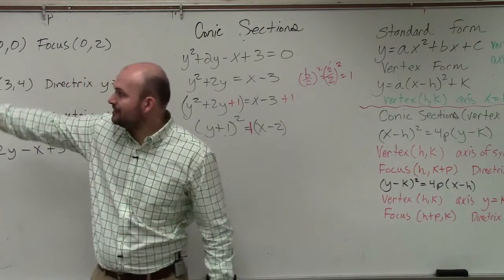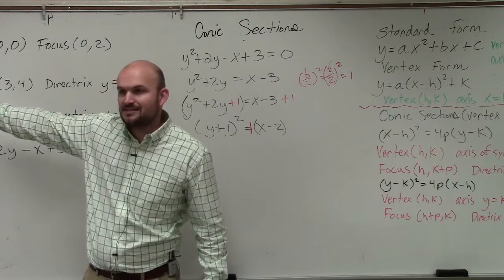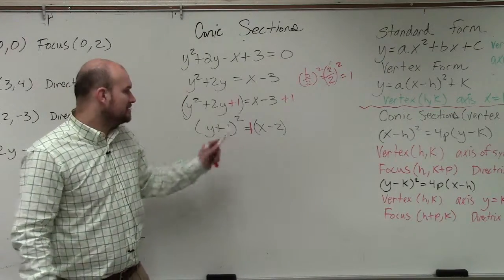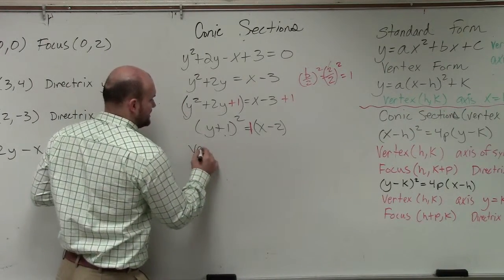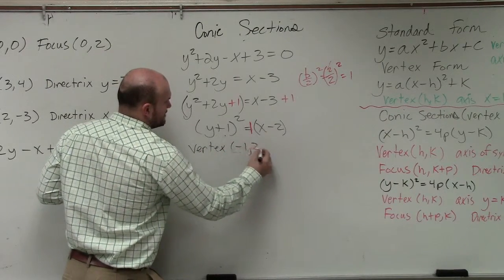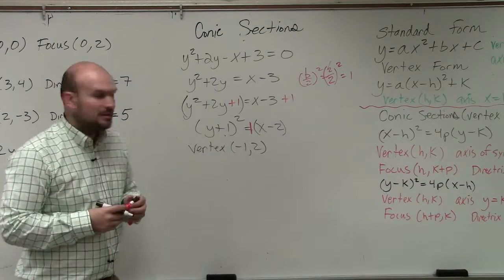Well remember, I'm asking you to find the vertex, the focus, the axis symmetry, right? So we're not going to be able to figure all that out from here. So the vertex is pretty easy to understand. The vertex is going to be negative 1 comma 2, right? Now, the other thing that's kind of important about this is y is squared, correct?